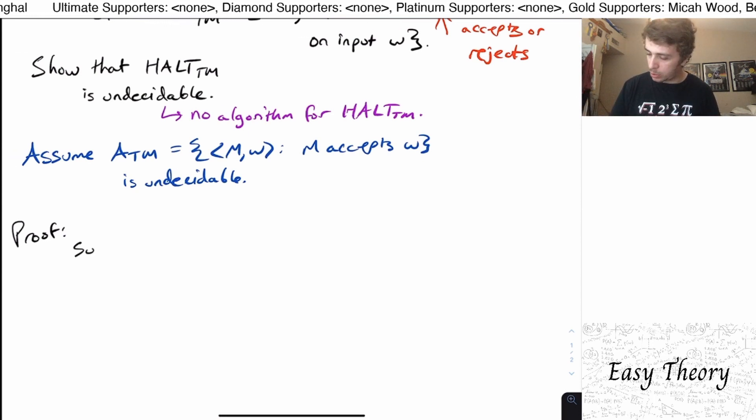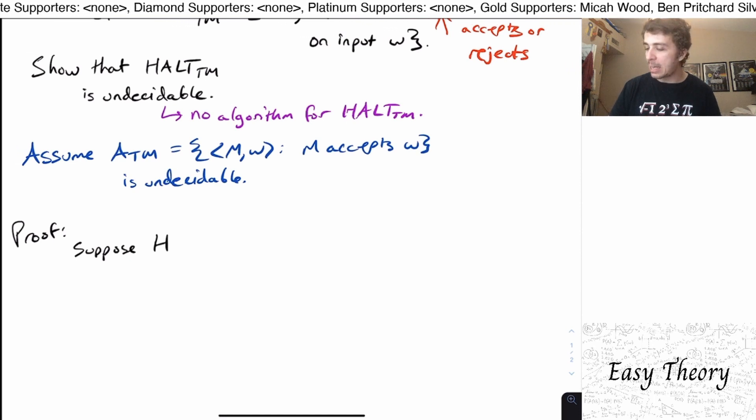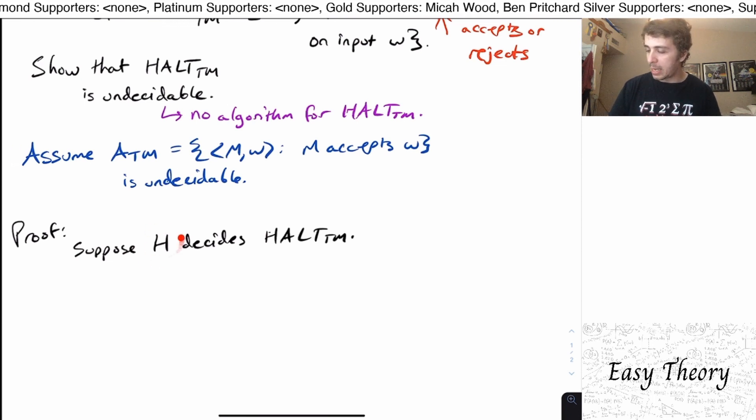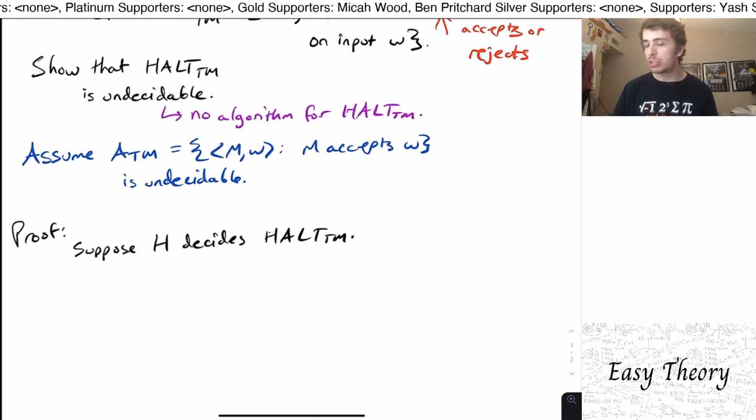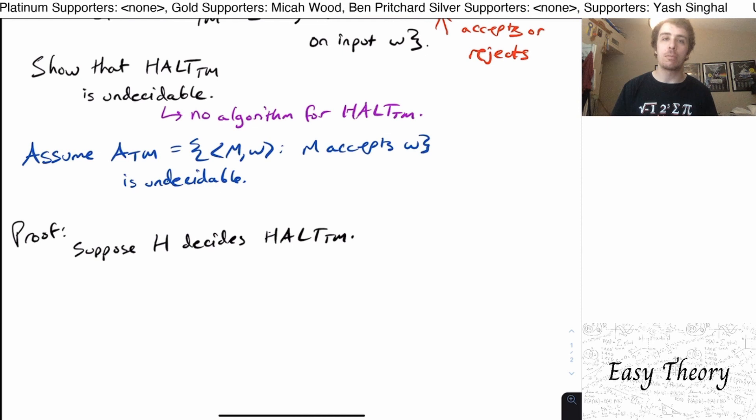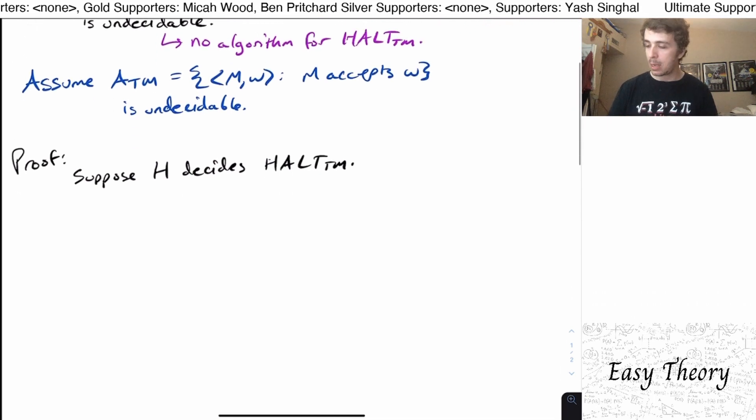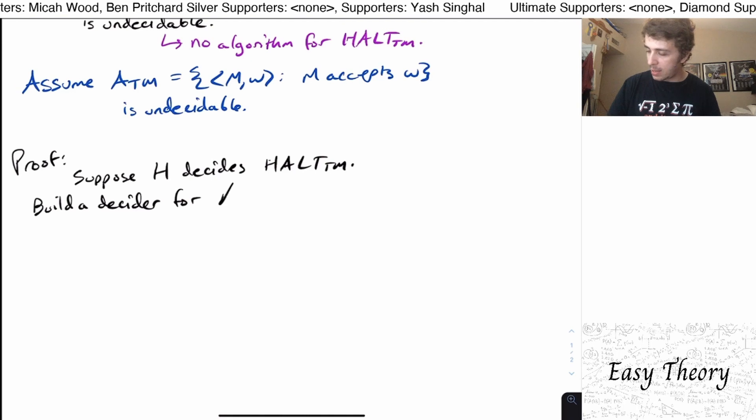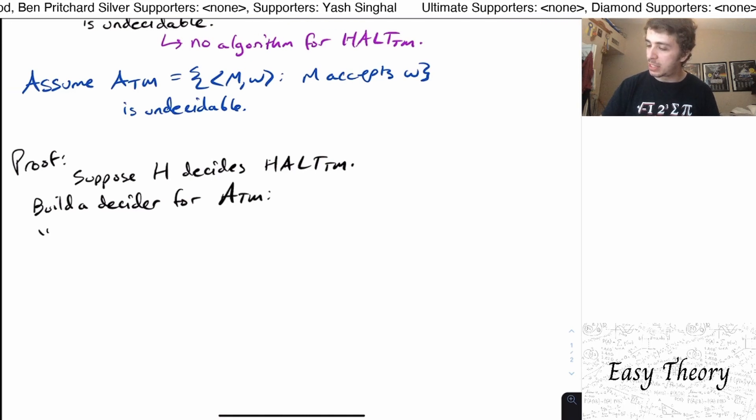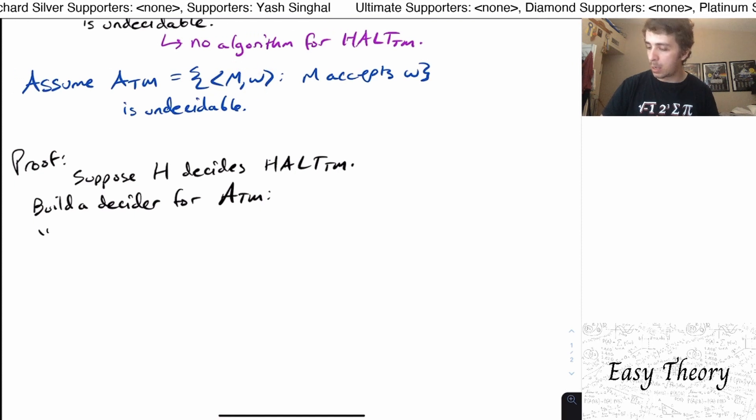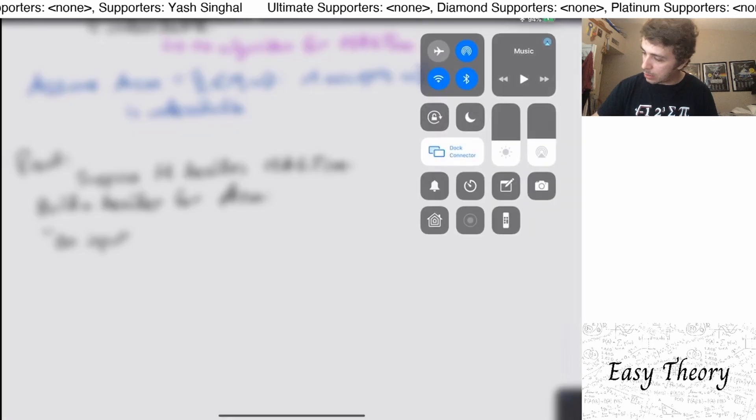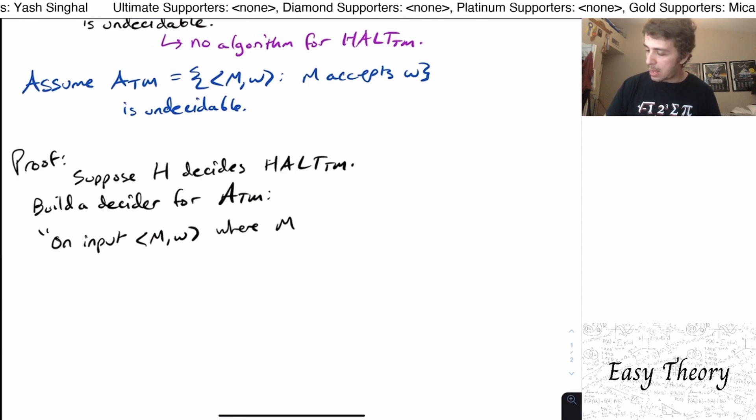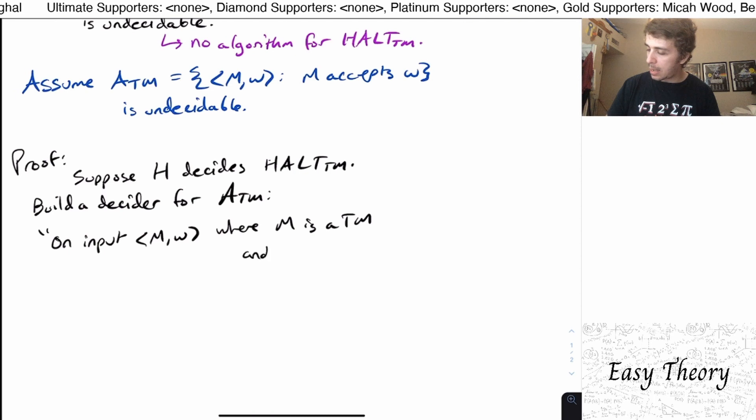So let's suppose that we're going to have a machine called H decides the language Halt TM. So this machine H, if I give it an input M and W, I'm supposing that in some finite amount of time, it'll tell me whether the Turing machine accepts the input or not. And so now let's build a decider for the language ATM. So remember, ATM must take input M and W, a string.